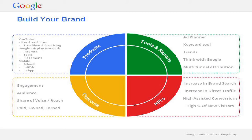Mobile is also a huge product offering within our mobile set. The free tools available include Ad Planner, which gives you an indication of the Google Display Network's placements; the Keyword Tool; Google Trends; Think with Google; and multi-funnel attribution reports. The outcomes we aim to achieve are engagement, audience reach, share of voice, and ultimately building your paid, owned, and earned media holdings.